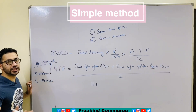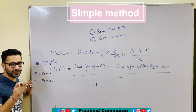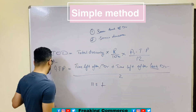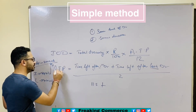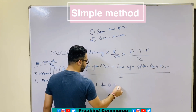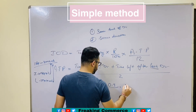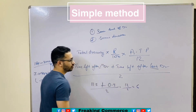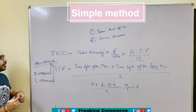Plus from 15th March to 31st March is 15 days, that is 0.5. Divided by 2: 12 divided by 2 equals 6. So this is your ATP.